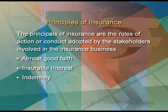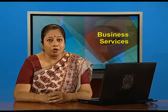The next principle is proximate cause. According to this principle, an insurance policy is designed to provide compensation only for such losses as are caused by the perils stated in the policy. When the loss is the result of two or more causes, the proximate cause means the direct, most dominant and most effective cause of which the loss is the natural consequence.